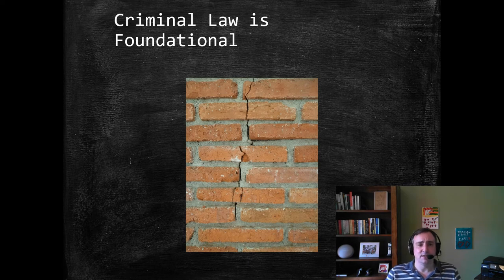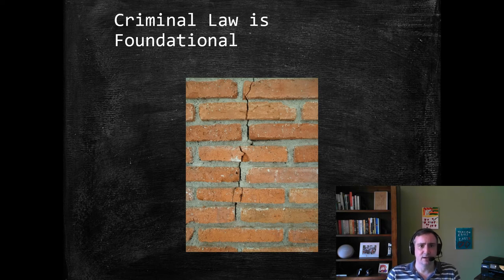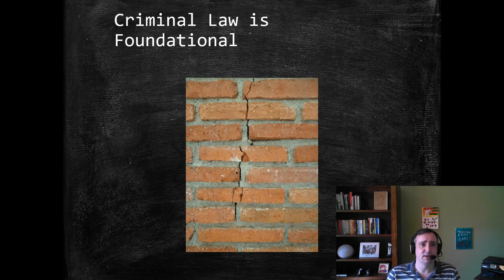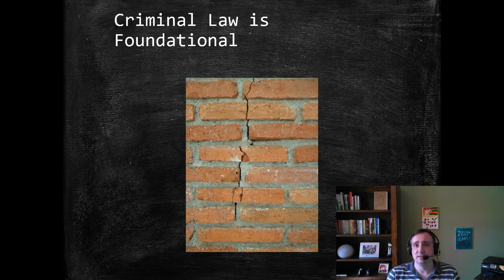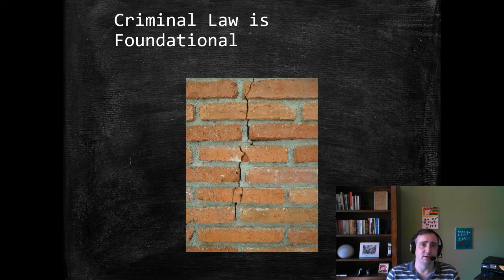Our criminal justice system and its problems are at the core of lots of major salient issues of our time. For example, issues of racism and racial discrimination often come to the fore in the criminal justice arena. Political corruption — many people think it is rampant and widespread in the United States. But in many ways, that's due to the shrinking of our law of what constitutes bribery, and an inability or unwillingness to criminalize certain forms of fraud. So criminal law, through its absence, has empowered corrupt forces within our government.